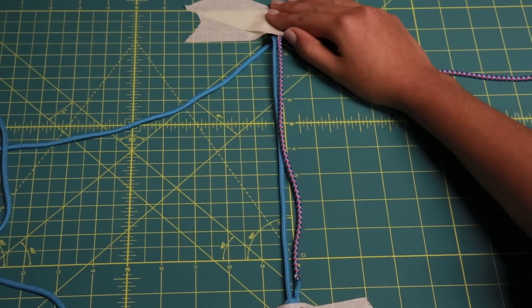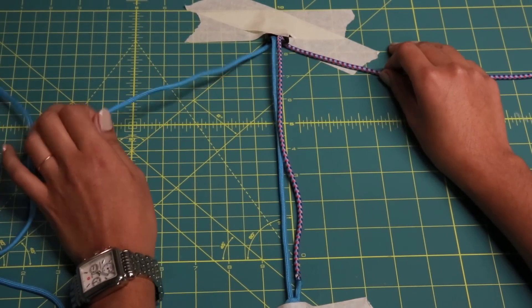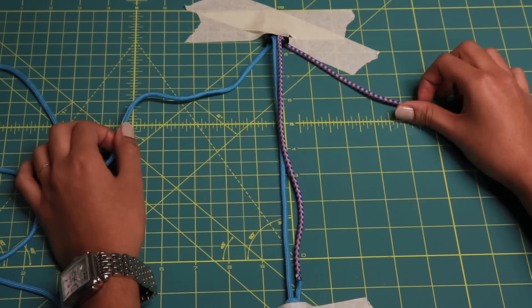You're going to start by taping down both ends and then you're going to go from left to right, going under, over, and then over and under.